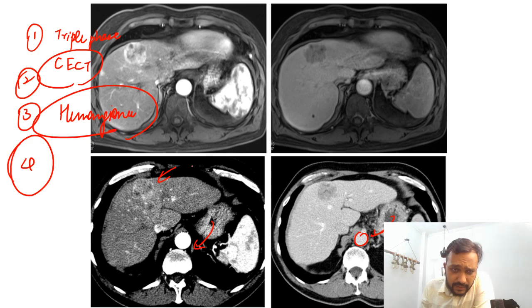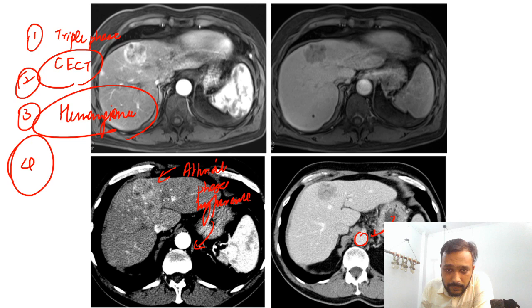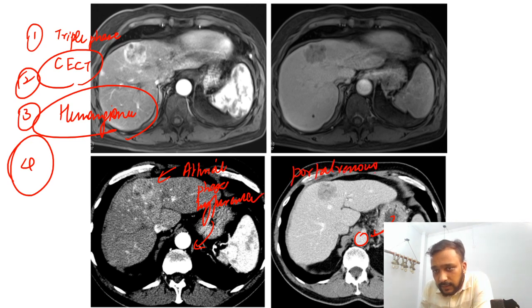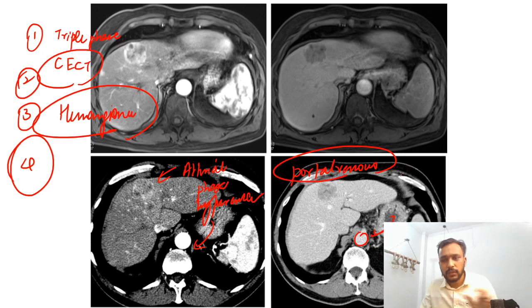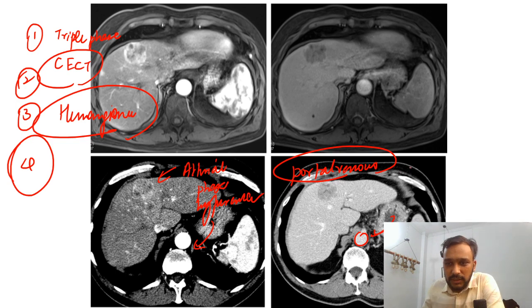In this arterial phase we are seeing a lesion which shows arterial phase hyper-enhancement. And if we look at the portal venous phase, we can see that this lesion is showing washout in the portal venous phase.